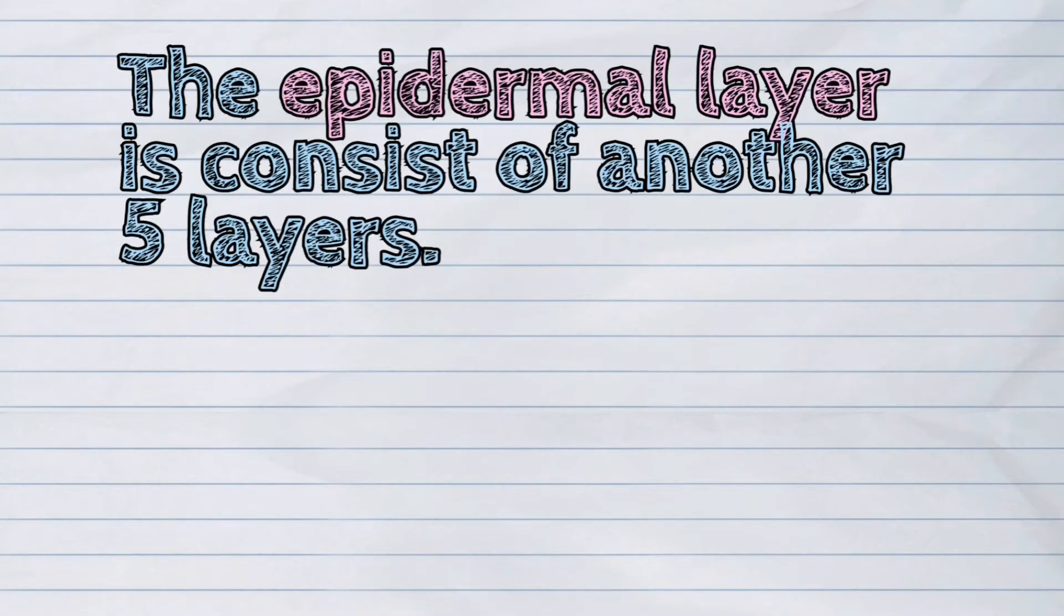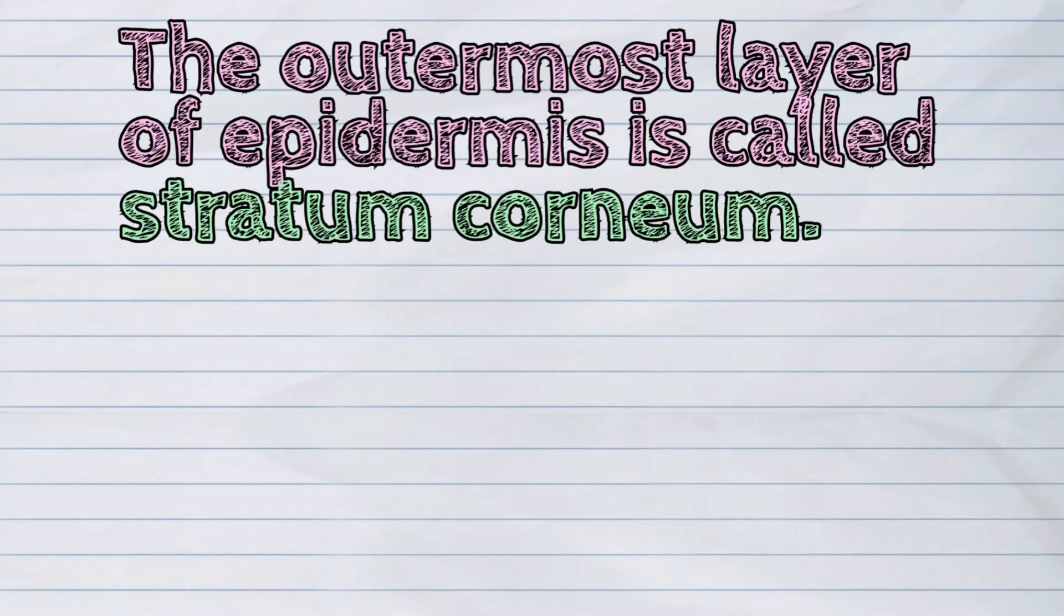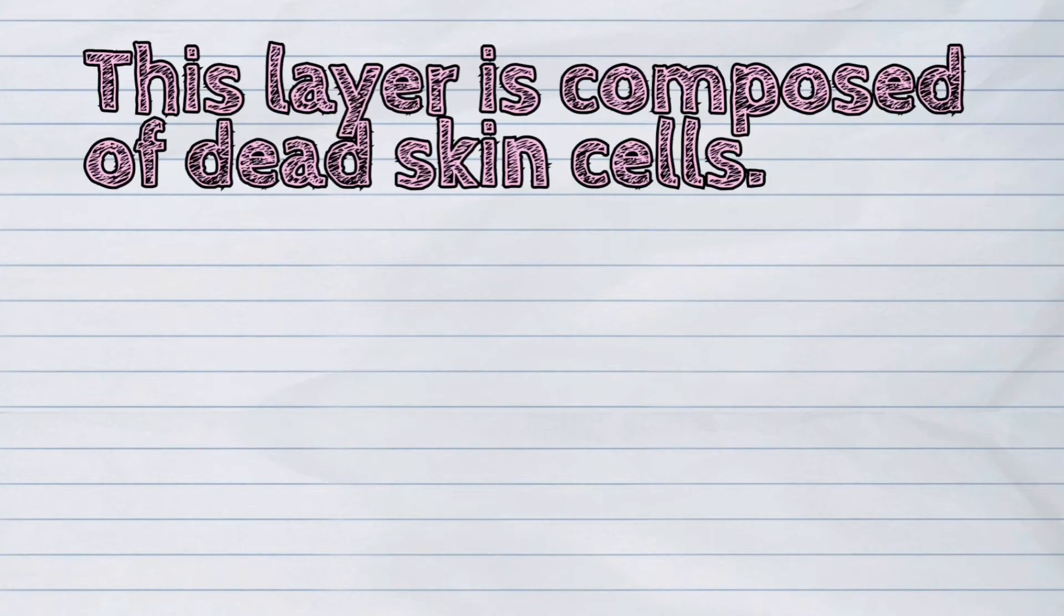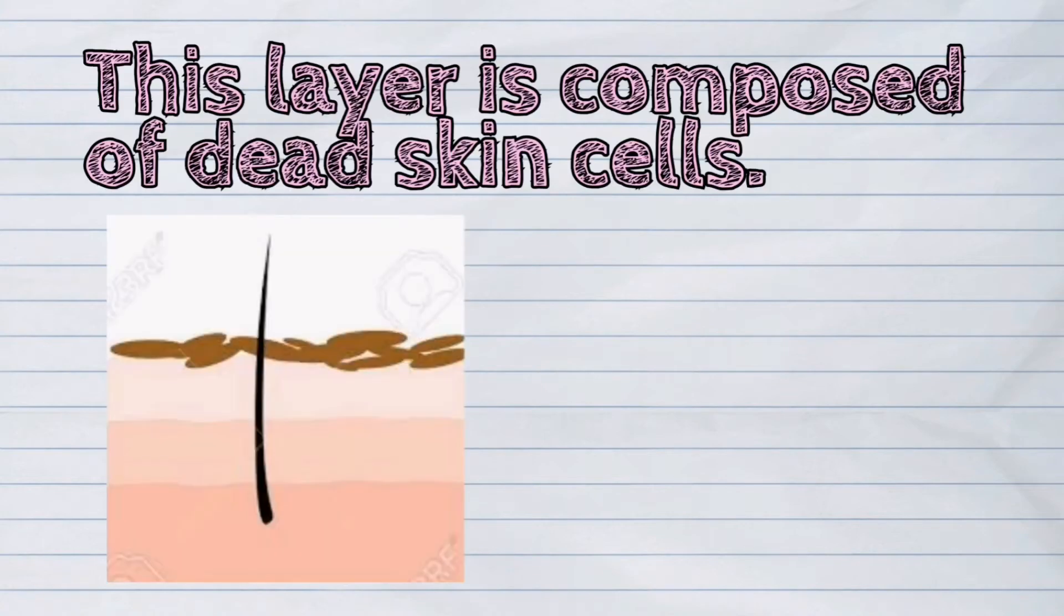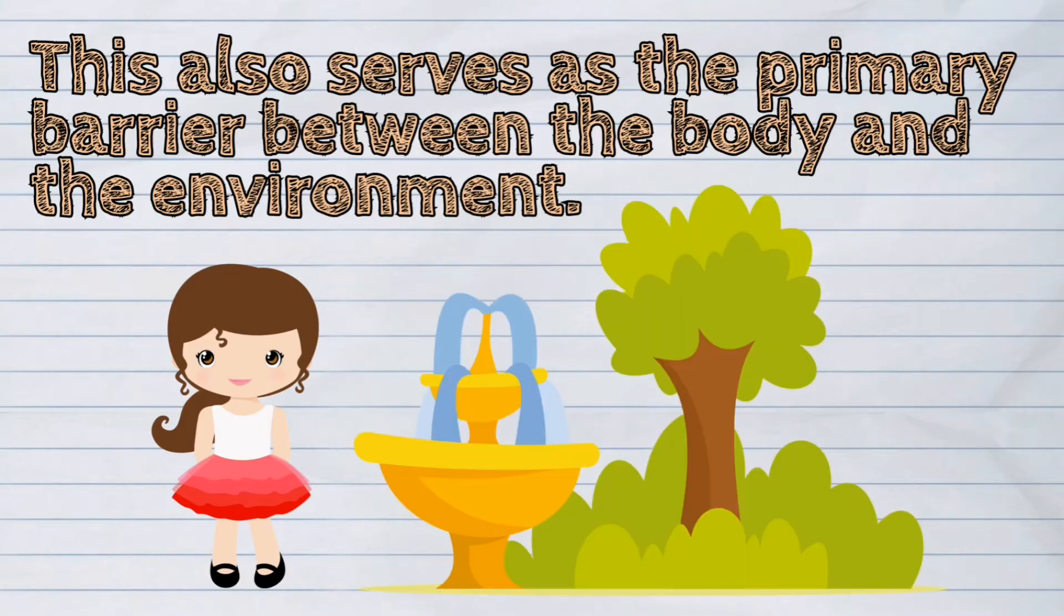The epidermal layer consists of another five layers. The outermost layer of the epidermis is called stratum corneum. This layer is composed of dead skin cells. This also serves as the primary barrier between the body and the environment.